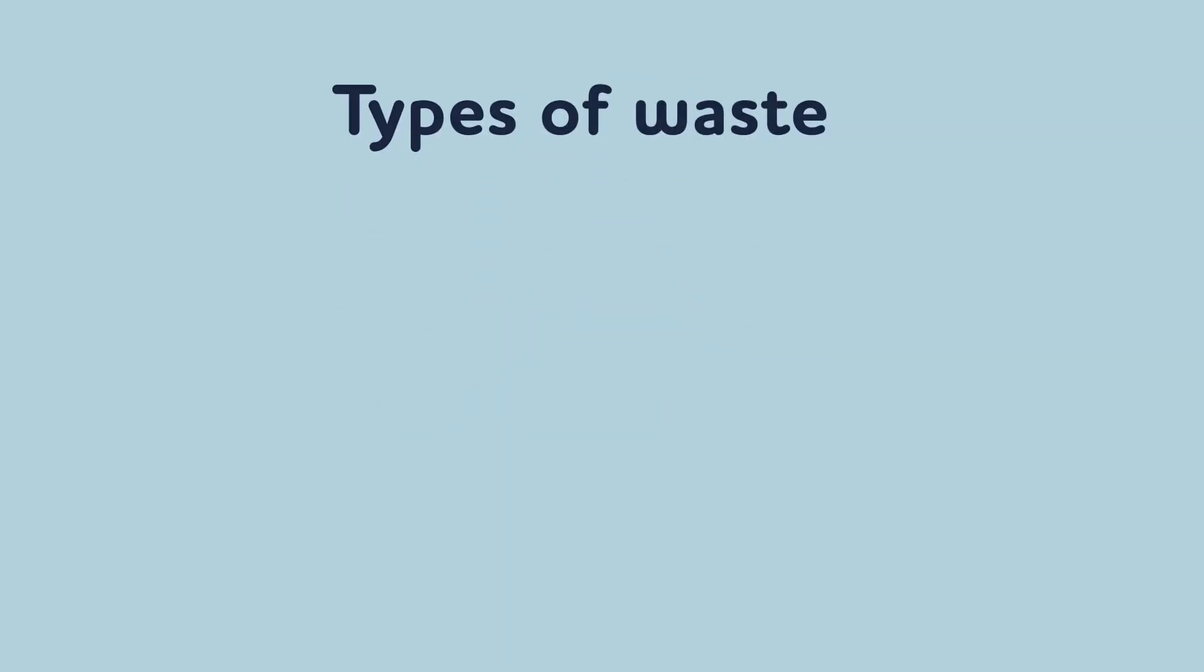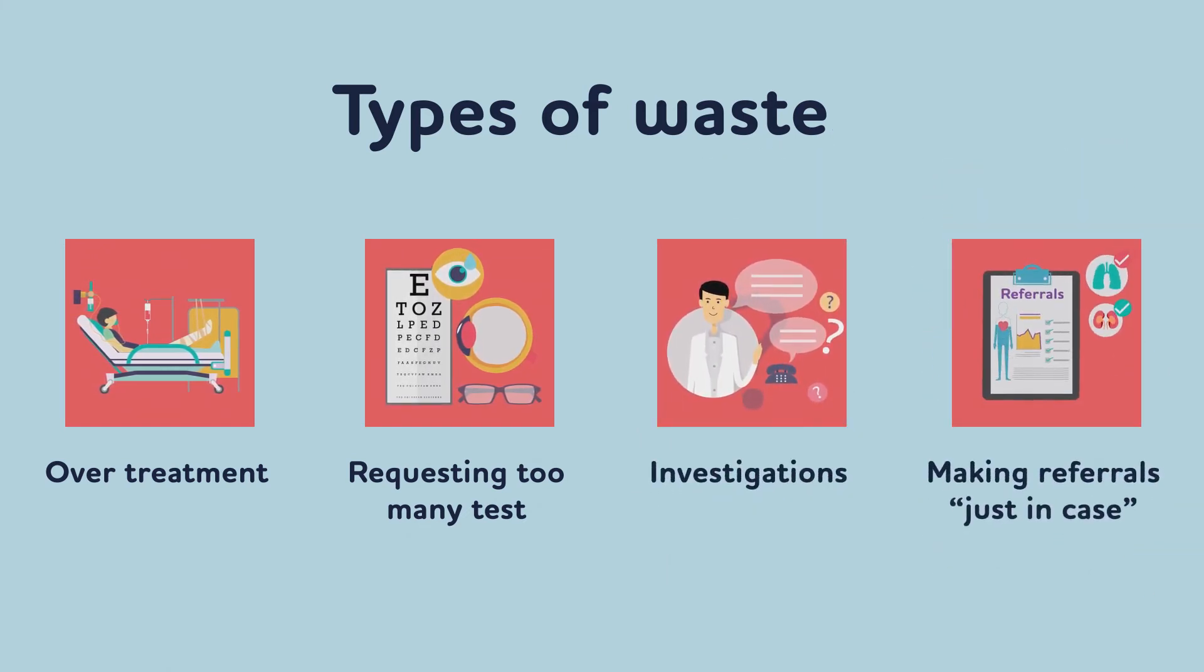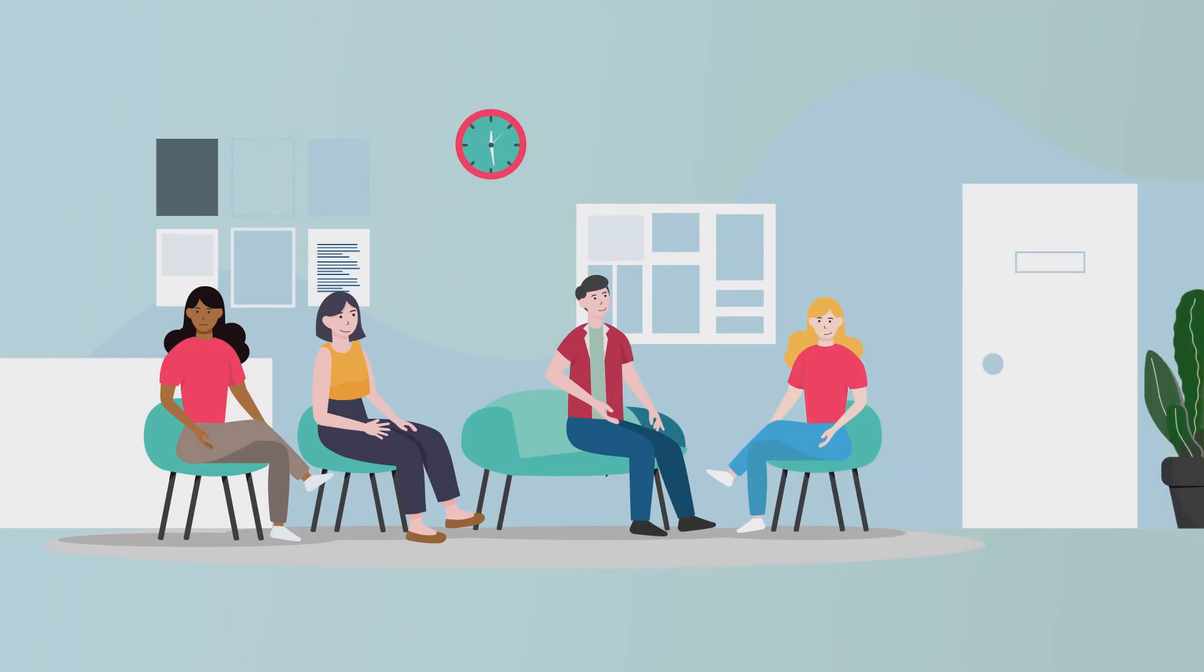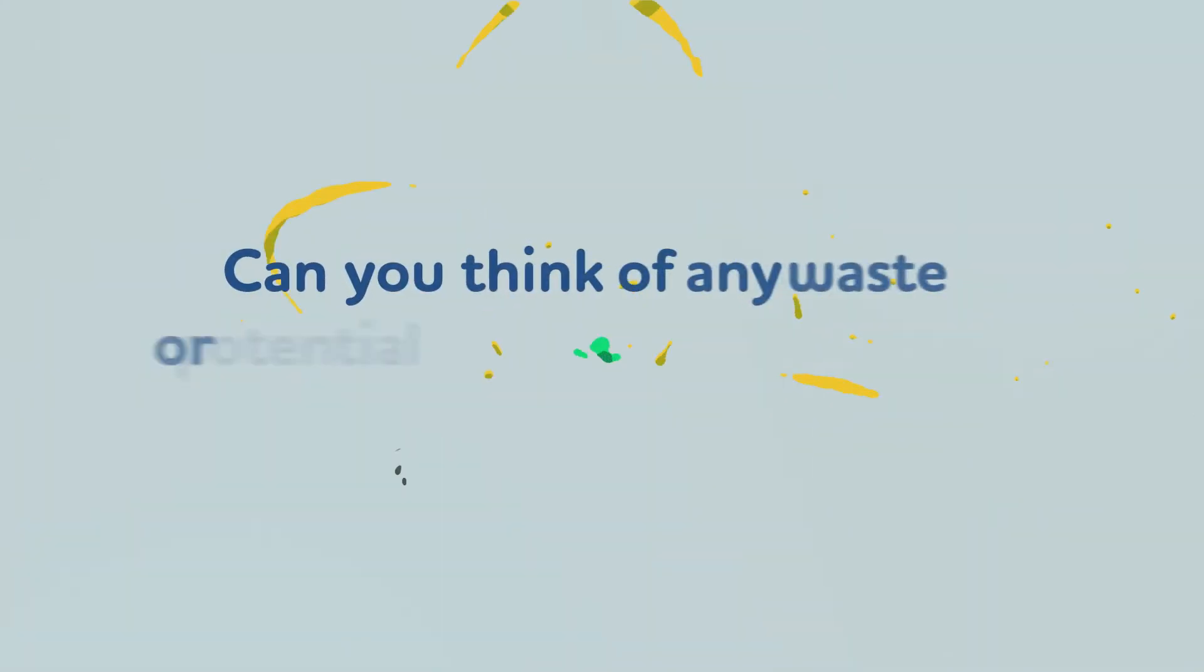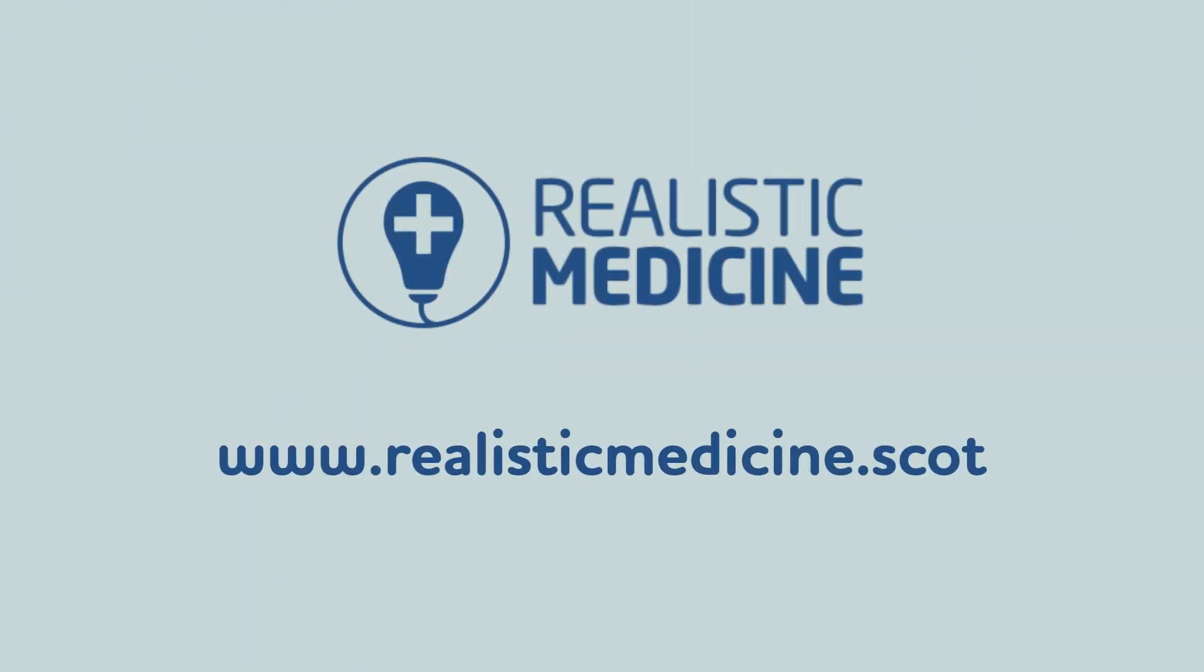There are many different types of waste. Examples include over-treatment, requesting too many tests, investigations and making referrals just in case. Poor coordination of care. When this is coordinated around patients' needs, we can often reduce unnecessary delays or poor utilization of people and their skills. Can you think of any waste or potential harm where you work? To find out more, visit realisticmedicine.scot.